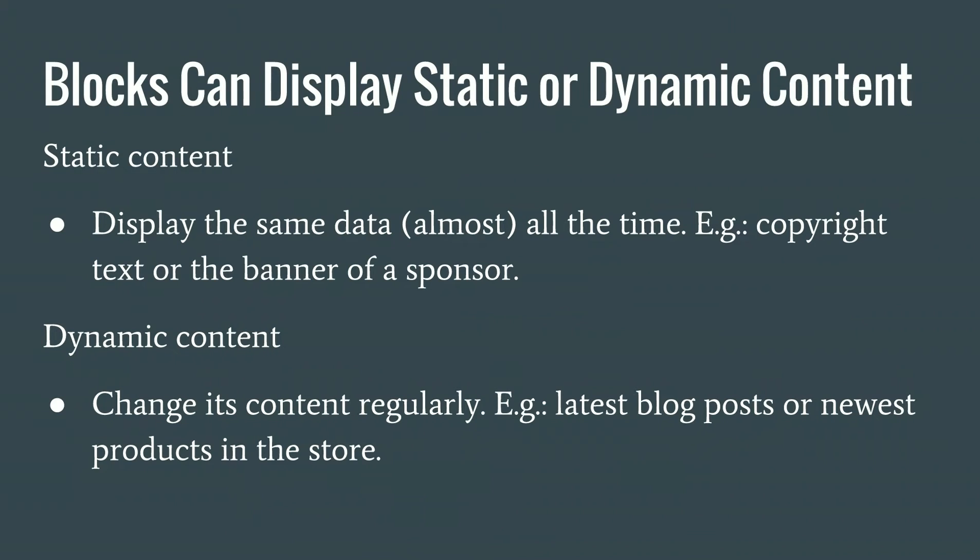Blocks can also display dynamic content — content that changes regularly. For example, if you have a blog and write a new article every day, you can have a block showing the five most recent articles; that will change every day. Or if you have a store with latest products coming in every week, that block will change every week. Depending on the nature of how often things change, blocks can be either static or dynamic.